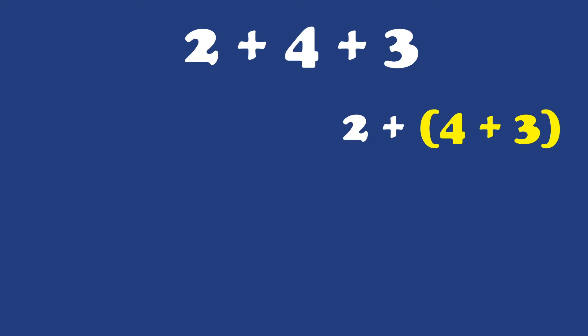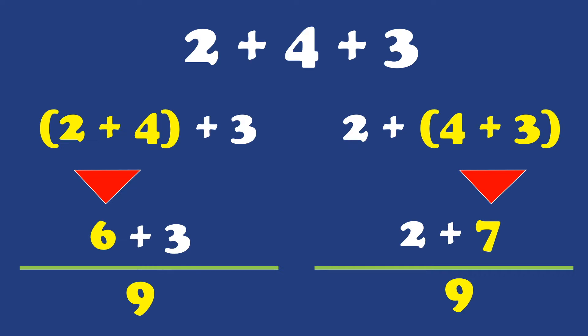So we're grouping the 4 and the 3 this time, and the 2 is separate. The 4 and the 3 equals 7, plus the 2 separately equals 9. And that's the other way, and see how it works for both.